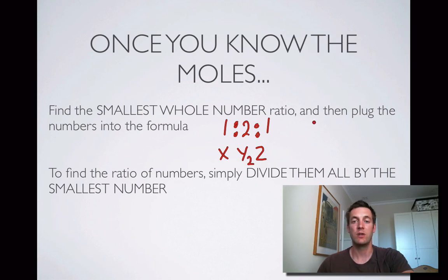So if I just had two elements and maybe the numbers of 3 and 4, and that was the simplest whole number ratio, let's call my elements a and b this time. It would be a3, b4. So that's what I mean by plugging the numbers into the formula.